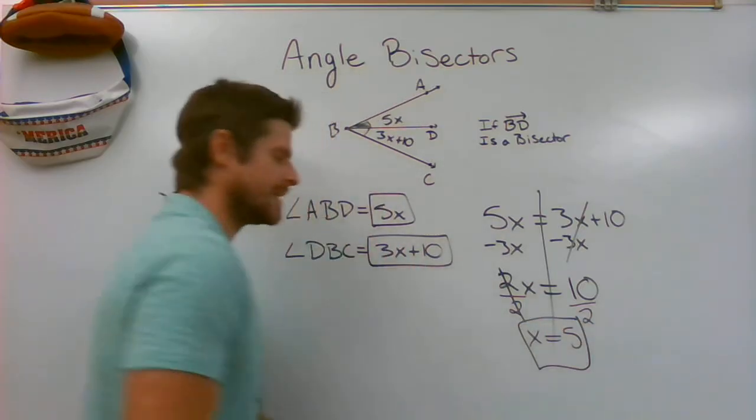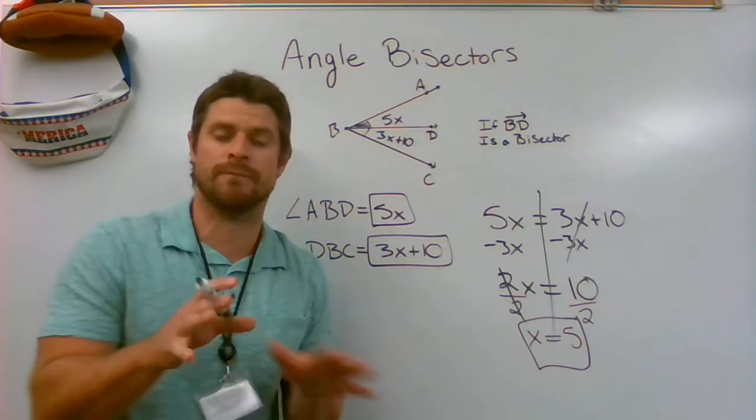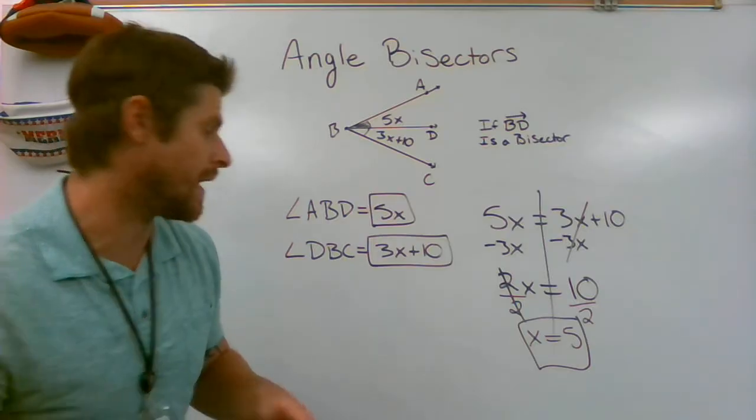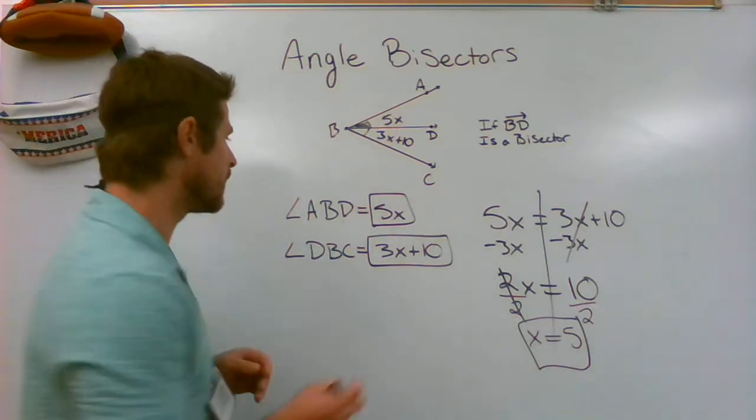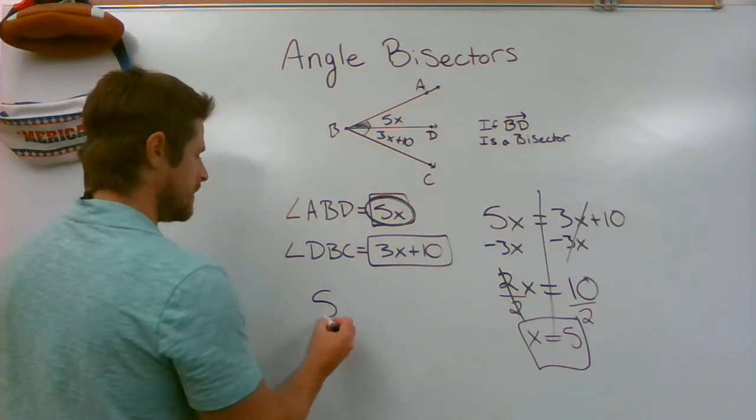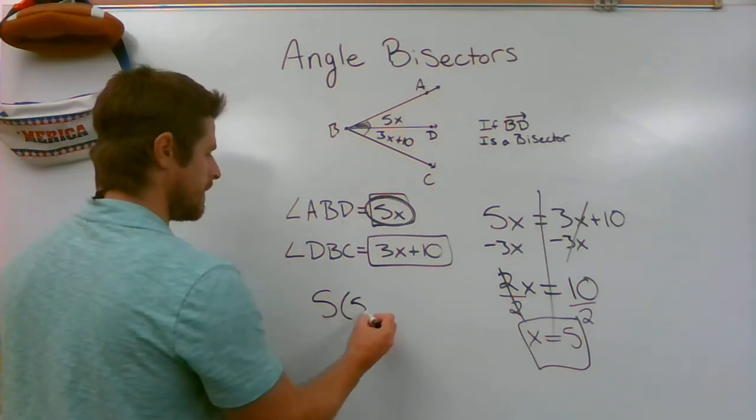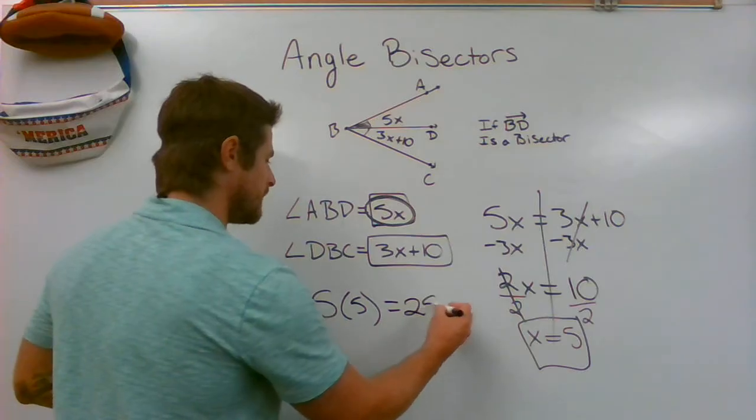I know what x is. Do not jump up here and say the angle is 5 degrees. It's not 5 degrees. x is 5. The angle, remember, is 5x. So, you want to say 5 times 5. And what you would get is an angle that is 25 degrees.